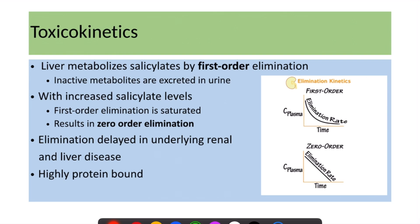Salicylates are metabolized by first-order elimination in the liver. When this first-order elimination is saturated, the metabolic elimination switches to zero-order elimination. In zero-order elimination, a fixed amount of the drug is excreted irrespective of plasma concentration, which increases the risk of toxicity.